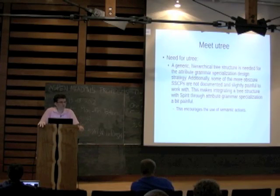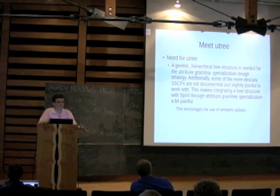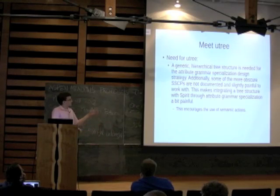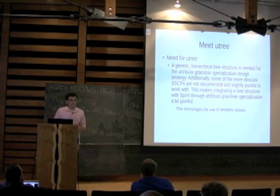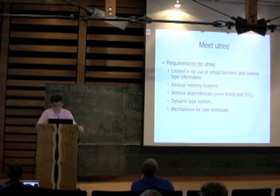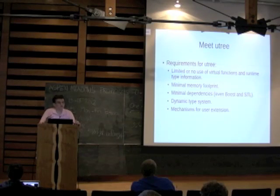The problem with implementing your semantics this way is that you need these specializations of the Spirit customization points, which are not wonderfully documented, and you need some sort of generic tree structure to work with. Unless you have a somewhat involved grammar, there's not a lot of motivation to avoid semantic actions. But that's why we wanted to design U-Tree. Our requirements were: it needed to be lightweight, with limited use of virtual functions and runtime type information, minimal memory footprint, minimal dependencies, a dynamic type system, and a method of extending the set of types representable by a U-Tree.